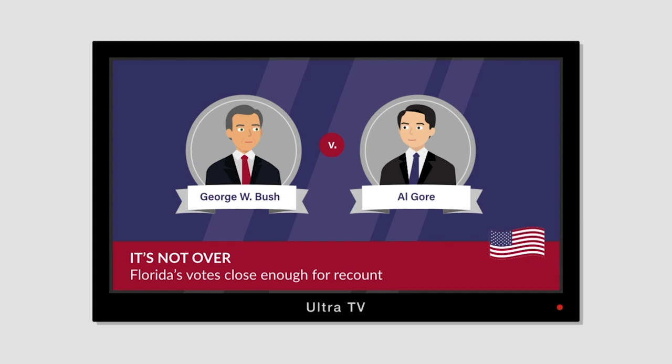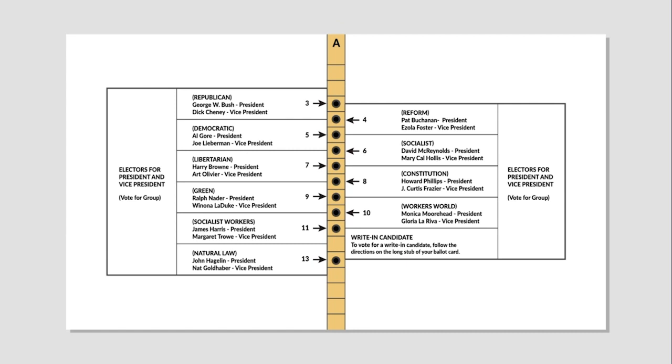On the morning of November 8, the preliminary tally in Florida had Bush ahead of Gore by 1,784 votes. The difference was less than one-half of 1% of the total number of votes cast. Under Florida's election law, this triggered an automatic recount by machine.